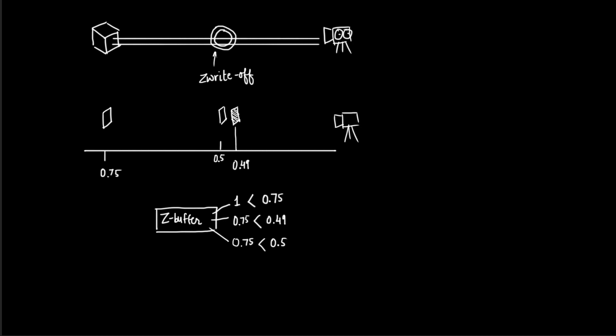If we had not turned off Z-write for the outline pass, the 0.49 value would have been written into the Z-buffer. When the turn of the sphere came, the Z-test would fail, the fragment shader would not be executed, and we would see the color of the outline on the screen — meaning the outline would be in front of everything.